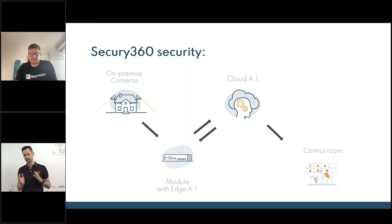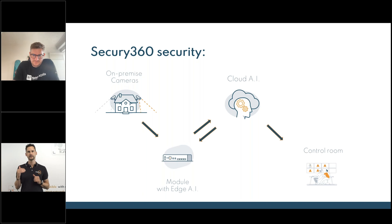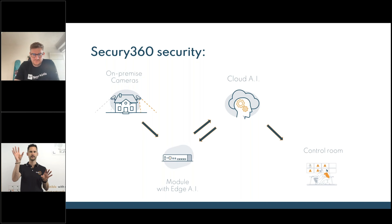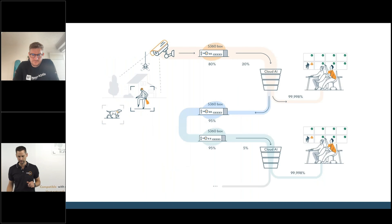It starts with the camera location — the stream comes into the box. The box has an edge AI that is very sensitive, designed for perimeter detection. The first AI is running on the box on location. Then you have a cloud AI that is running, and we have different integrations with control room platforms. Our cloud AI filters out the false detections — it's quite strict. So we have a two-way identification: the box is very sensitive, the cloud is very strict. That's why we have a very accurate system as an outcome to send to control rooms, mobile app, or trigger the alarm on location.